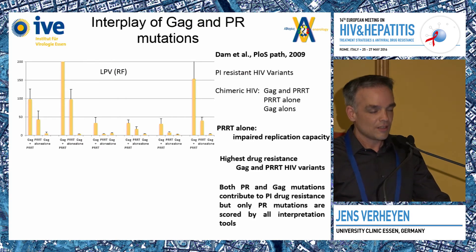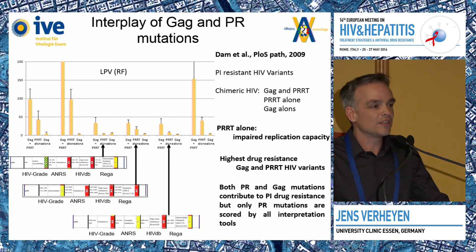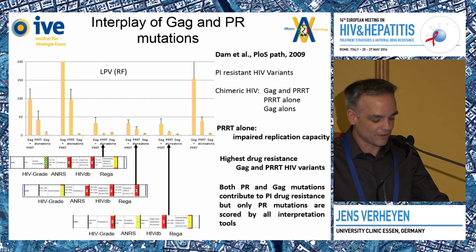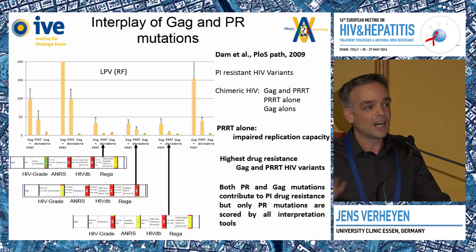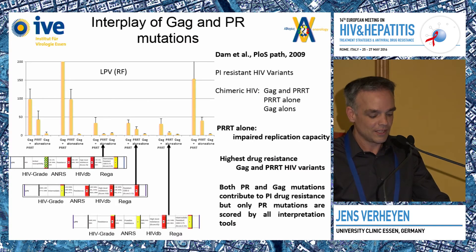What we do in routine diagnostics is analyze only protease. I put these protease mutations that were cloned in a wild-type background into our interpretation tools — HIFCrate, RNS, HIFDBR, Stanford, and Rega — and asked how much drug resistance is predicted. These tools do not really agree when analyzing only protease. These are highly drug-resistant viruses, and if you look at the resistance folds for viruses carrying both GEC and protease mutations, these viruses are really drug-resistant. But if you only analyze protease, the resistance factor appears quite low.